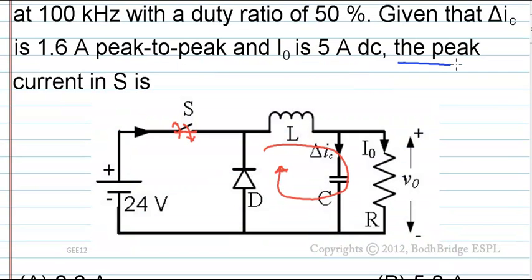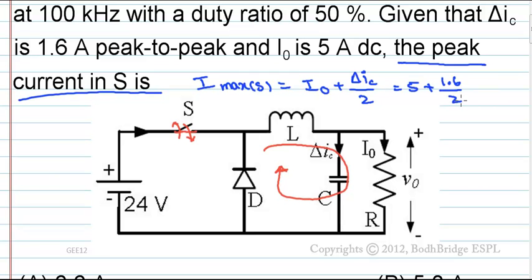In the question, the peak current in S is—we need I maximum through S. That equals I0 plus delta IC by 2. This is equal to 5 plus 1.6 by 2 equals 5.8A.